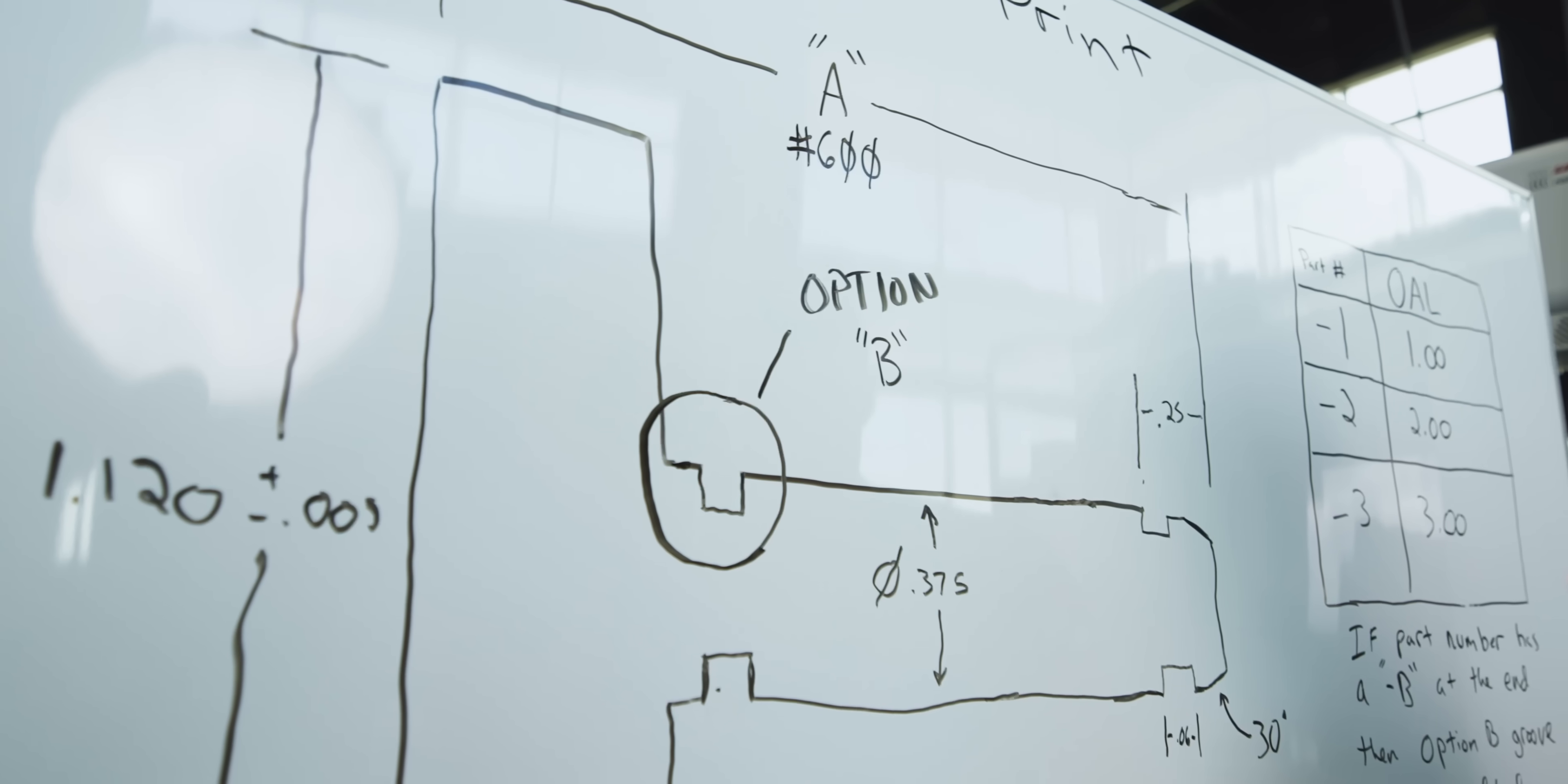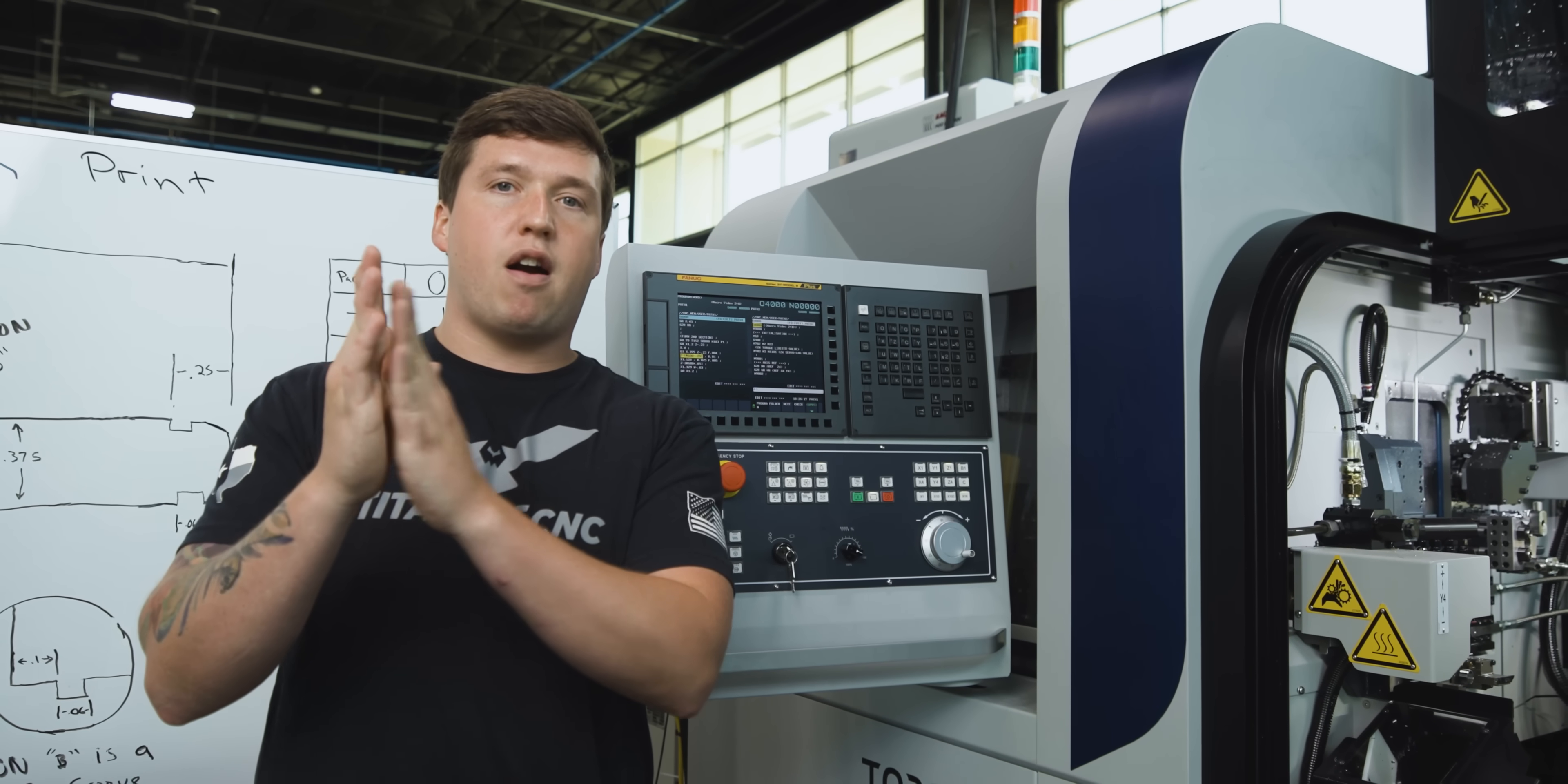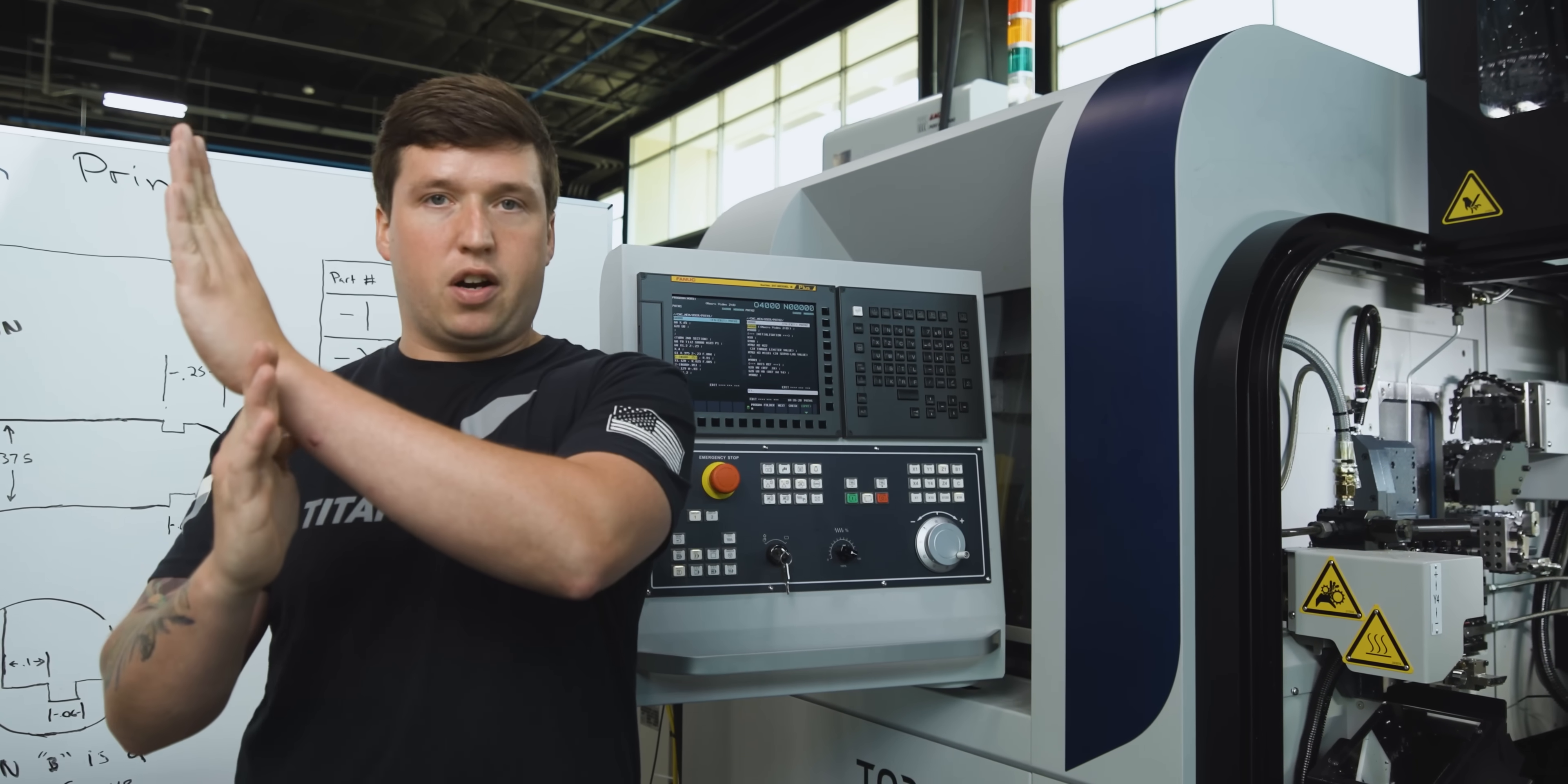We know the overall length of our part is pound 600, but there's also a shoulder on our part that's .250 long. So I don't want to feed right here to the end of my part. I want to stop right before that shoulder and come up and across.